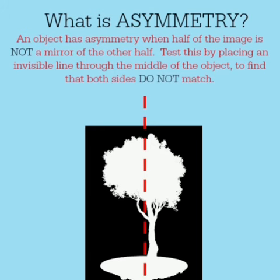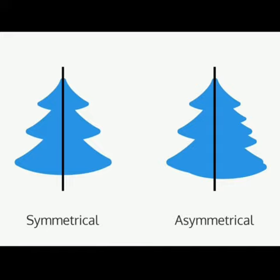What is asymmetry? An object has asymmetry when half of the image is not a mirror of the other half. In other words, if the two parts of a figure made by a line do not fall exactly on one another, then the figure is not symmetrical about that line.